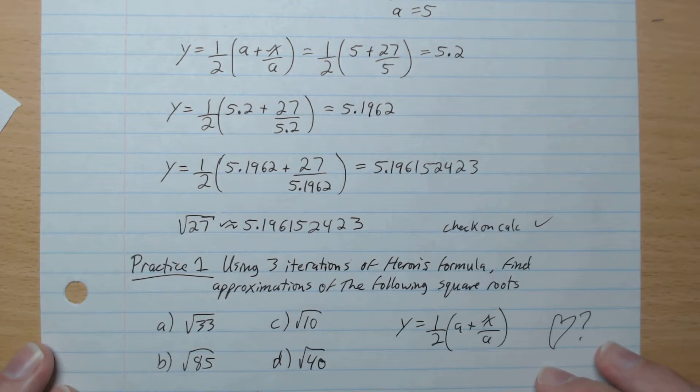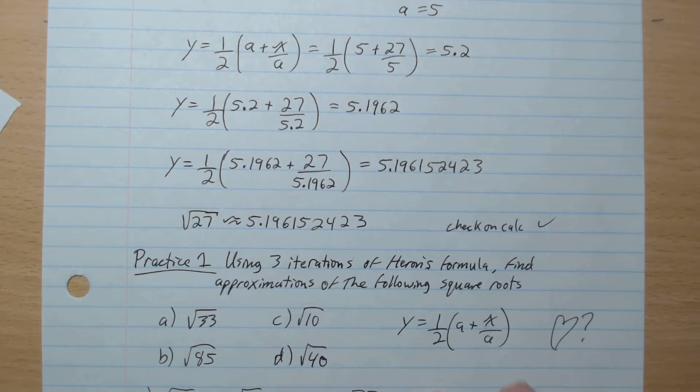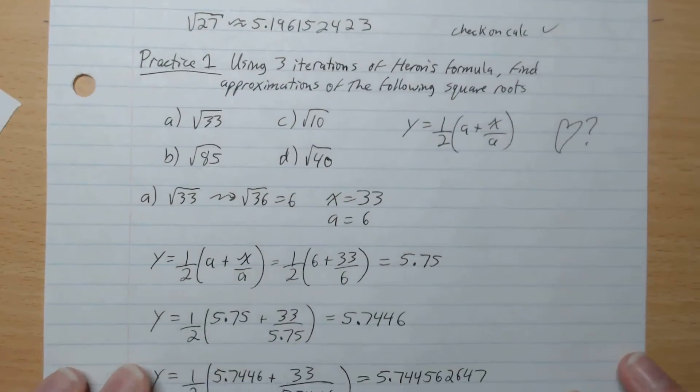So practice number one. Using three iterations of Heron's formula, find approximations of the following square roots. Root 33, root 85, root 10, and root 40. And the equation is here, y equals half a plus x over a. Is this something that you have to know by heart? Ask your teacher. Your teacher may want you to learn that by heart.